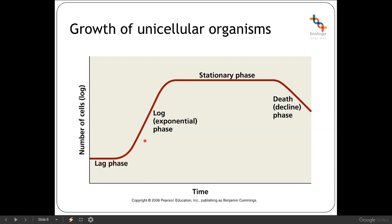We then move into the log or exponential growth phase, where cells grow and multiply at the maximum rate, providing there are no limiting factors and all required raw materials are available. The population doubles with every cell division, increasing exponentially. We then come into the stationary phase, where nutrients begin to run out. We don't have too many cells dying off but we're not growing at the same rate either.